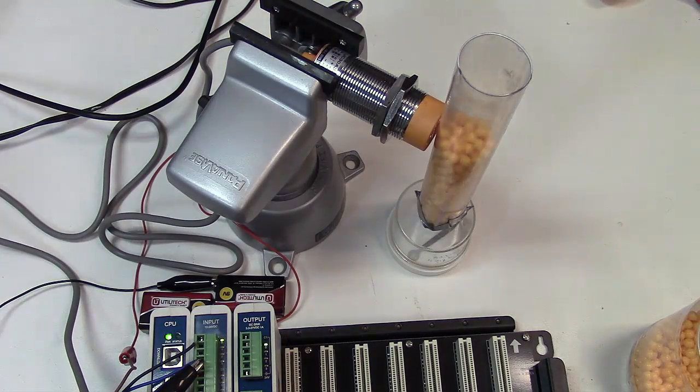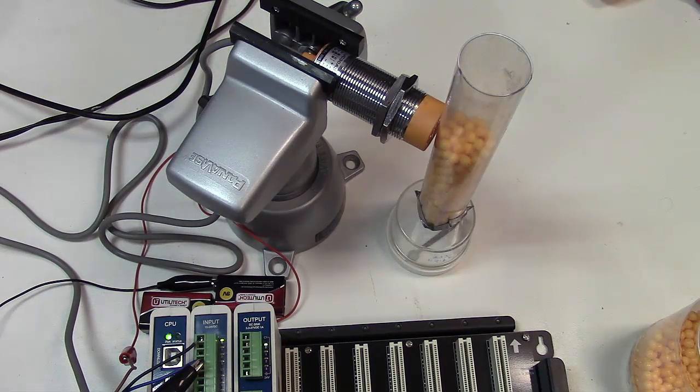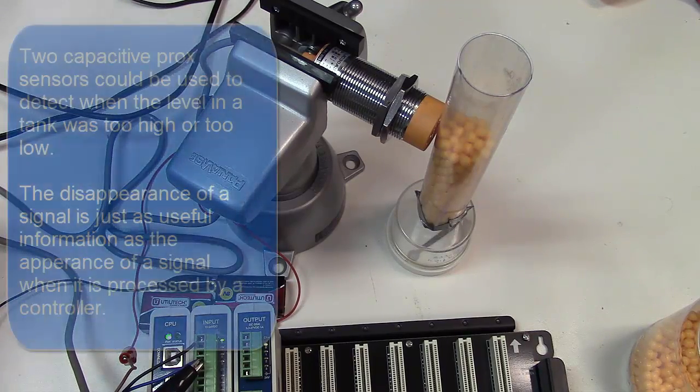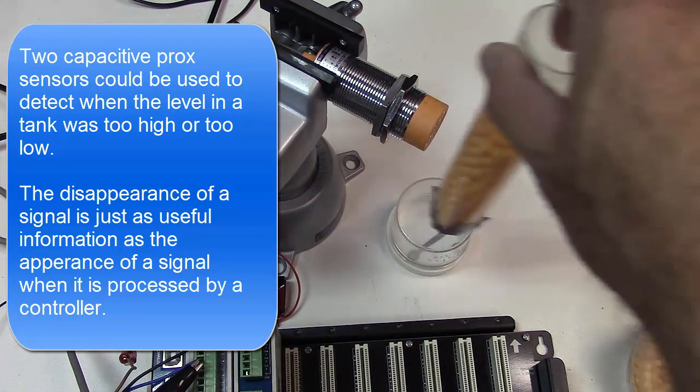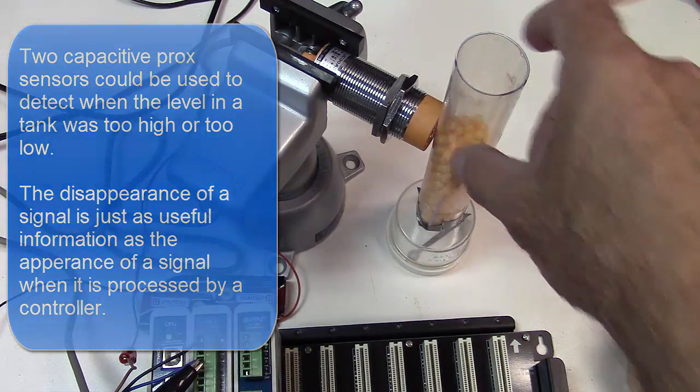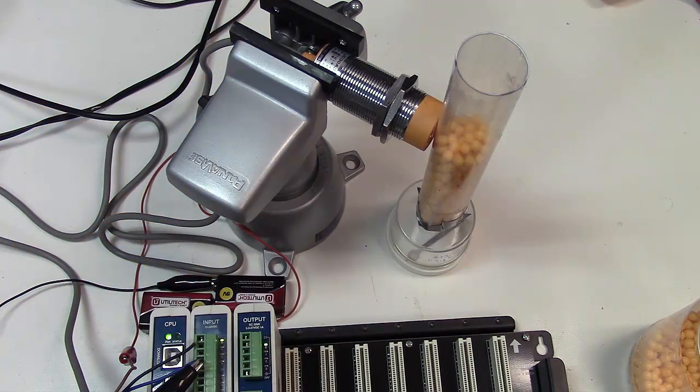So you can see how this would be useful. You could use this to stop a pump or some transfer mechanism when the tank got too full. You could also use another proximity sensor at the bottom of the tank to sense when the level got too low. So you could use two proximity sensors to sense whether the resin for an injection molding machine or some other bulk material, whether the level was too high or too low, program your PLC to do the appropriate thing.